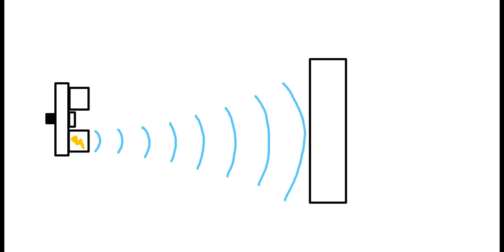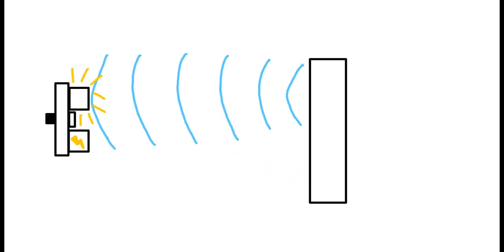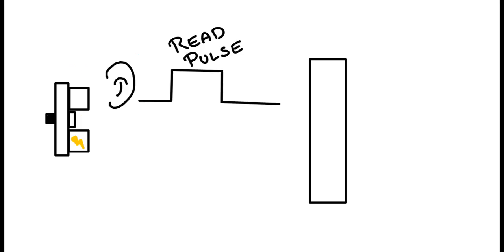First, we have to trigger the transmitter to send a signal. Then we have to wait for the signal to hit the object and travel back again. When the signal returns, we have to read the length of the pulse. The pulse is lasting just as long as it took for the signal to travel to and back from the object. Then we have to multiply this time with the speed of sound and divide it by 2, since we only want the distance to the object and not the round trip to the object and back to the sensor again.